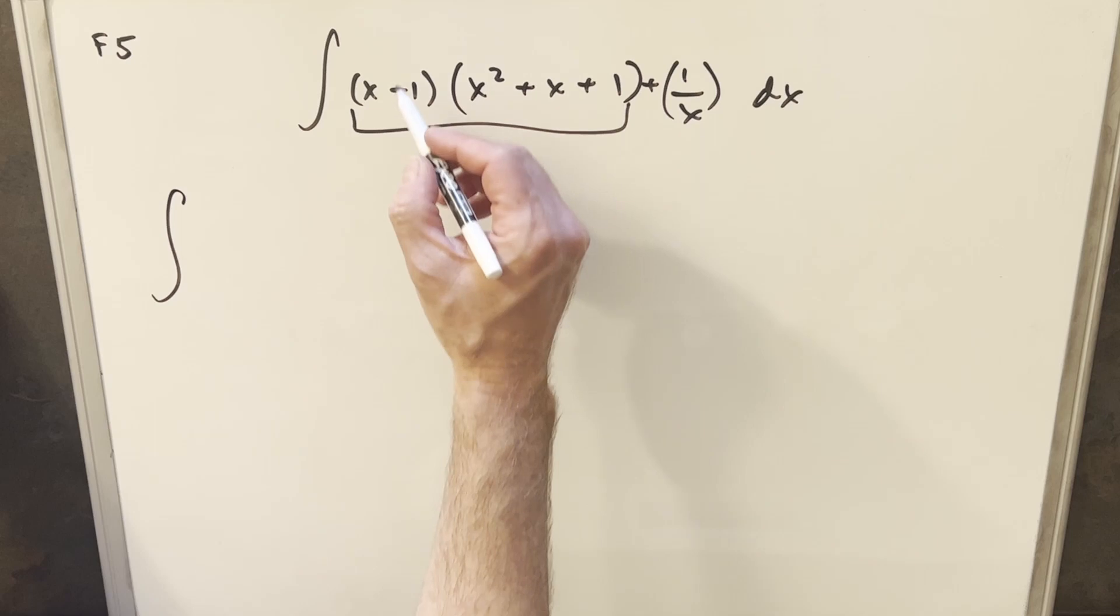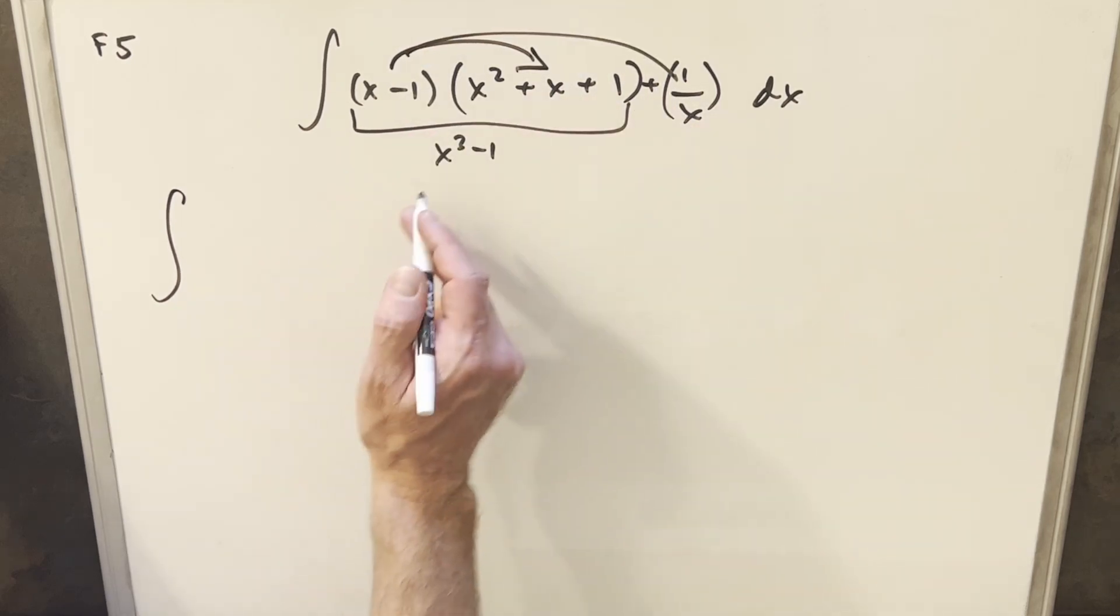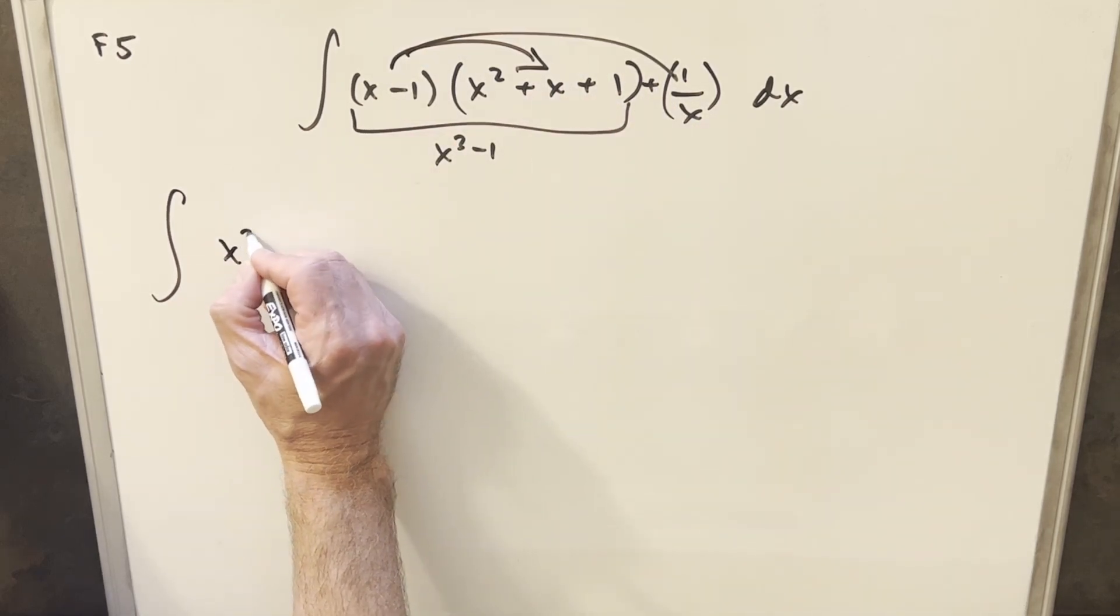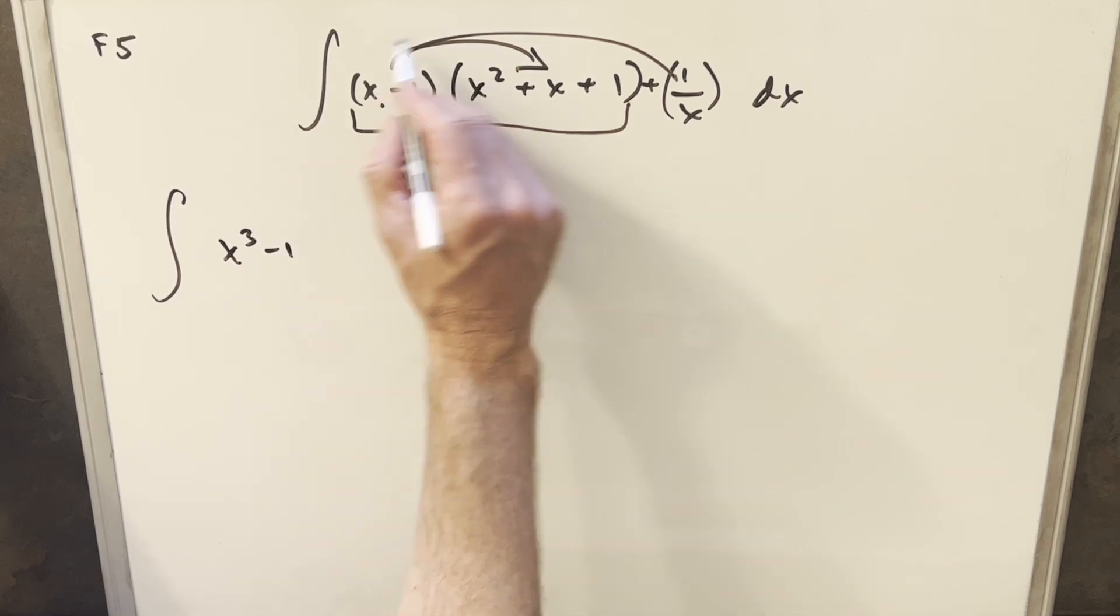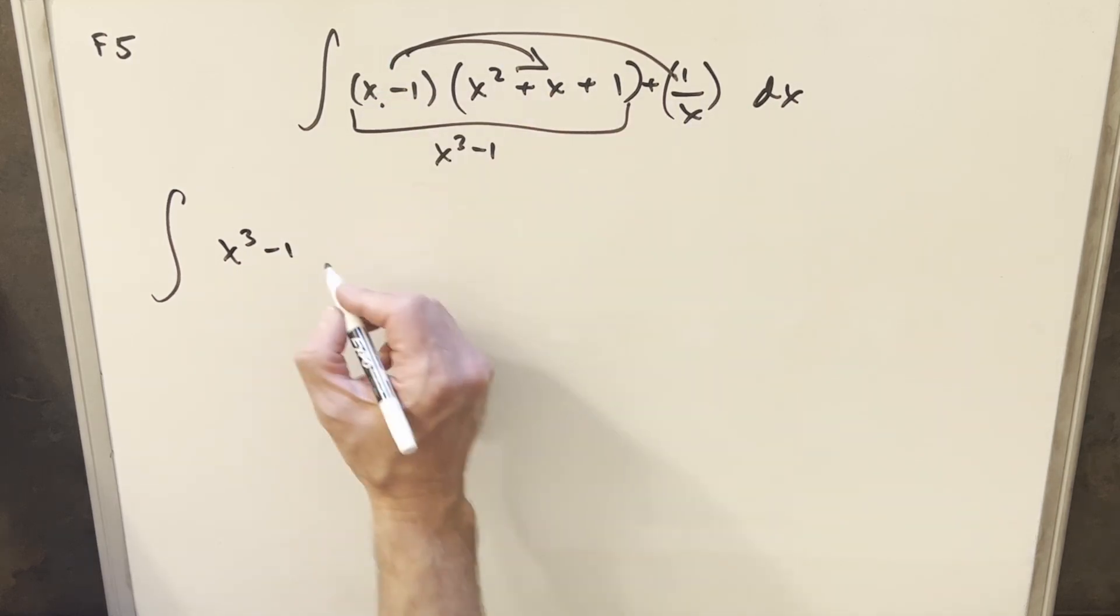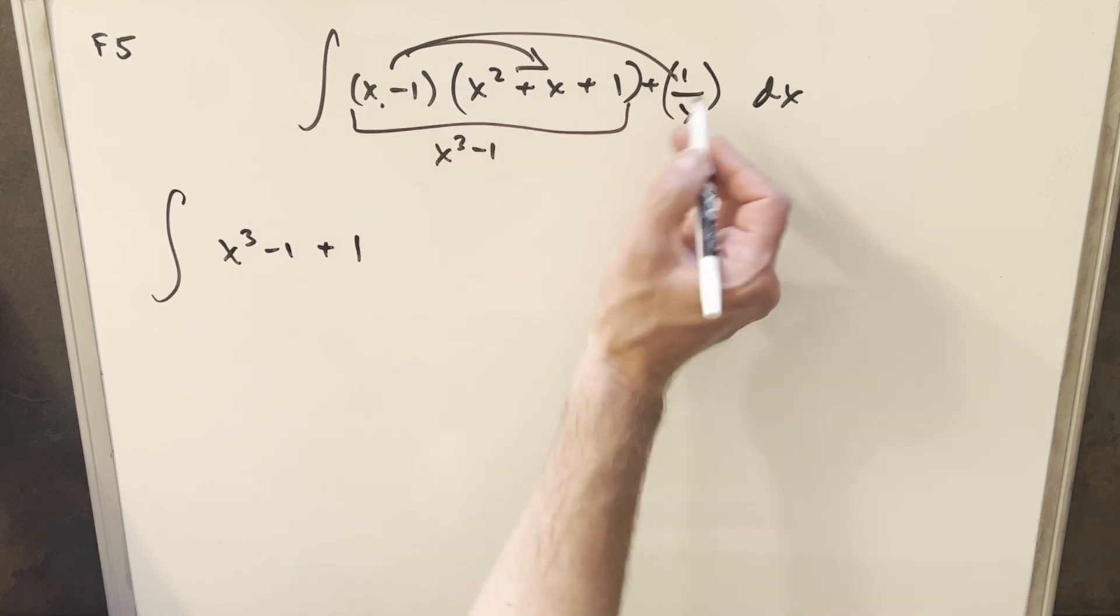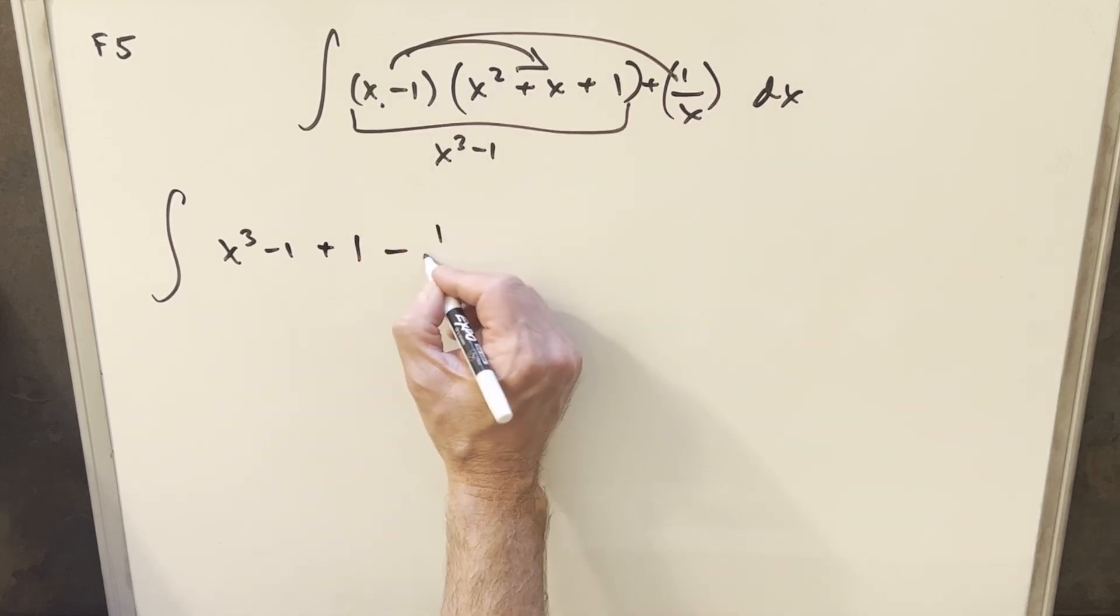So what I can do is rewrite this distributing in here and in here. And so the first piece, like I said, is going to be x cubed minus one. Then distributing the second part, x times one over x is going to be a plus one minus one times this is going to be minus one over x.